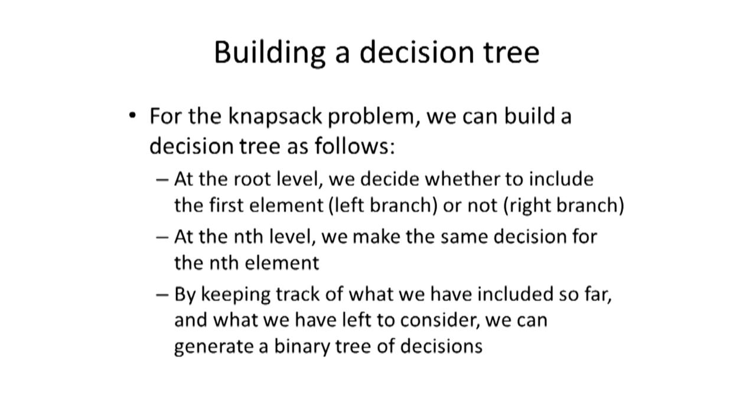To build the tree, we can say at the root level we need to decide whether to include the first object or not. If we're going to include the first object, we'll take the left branch. If we're not going to include it, we'll take the right branch. It's a decision. We'll do the same thing at each level. At the nth level, we're making the same decision for the nth element. And in particular, by keeping track of what we have included so far into the knapsack to get to that branch, and what we have left to consider, we can generate a binary tree of decisions.